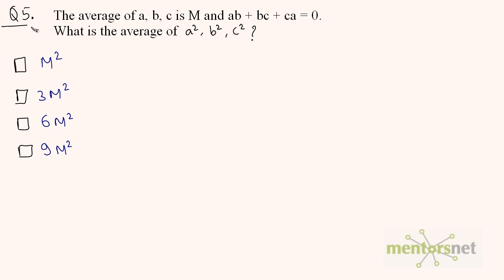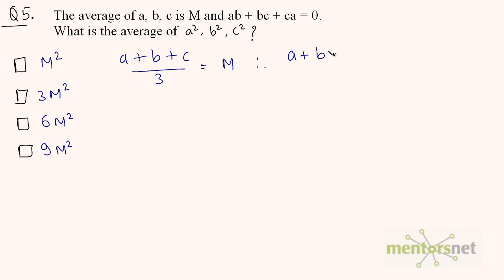Time for the last and a bit difficult question. The average of A, B, C is given as m, and AB plus BC plus CA equals 0. What is the average of A², B² and C²? The average of A, B, C is m, so A plus B plus C divided by 3 equals m. Therefore A plus B plus C equals 3m.